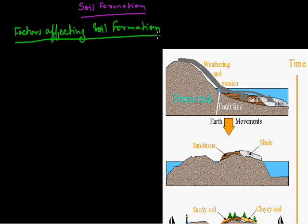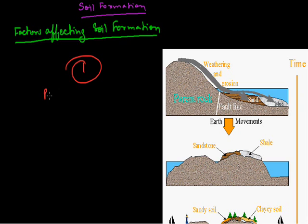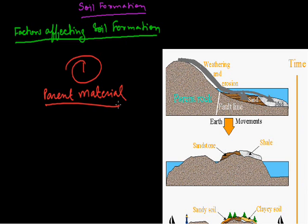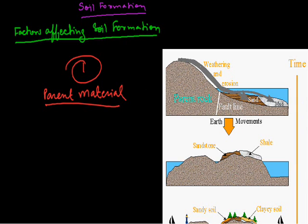Factors affecting the formation of the soil. The first factor is the parent material. Parent material is a passive control factor in soil formation. The color, texture (size and structure), and minerals and chemicals of the soil all depend on the parent rock from which it was made.